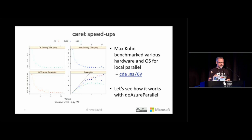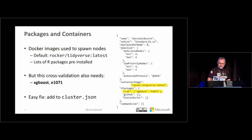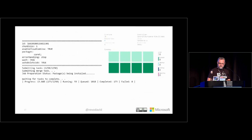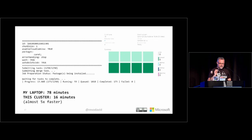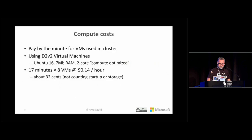In terms of speed-ups: we ran cross-validation with eight nodes — half low priority, half regular priority. Running it on my laptop took 78 minutes; this is a case where running on a cluster really helped and it wouldn't fit on a single machine. It ran about five times faster in just 16 minutes. How much did it all cost? You only pay for the time you use since the cluster automatically shuts down when finished. Using low priority nodes, that 16-minute computation cost about 32 cents.